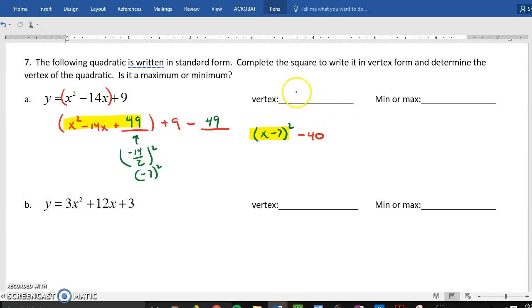Well, if I look here, the vertex now is just the opposite of what this is. What's the opposite of negative 7? 7, and then this. You don't take the opposite of that. Now, since you know your a is 1, because there's no number in front, since it's positive, we know it opens up, which means this is going to be a minimum.